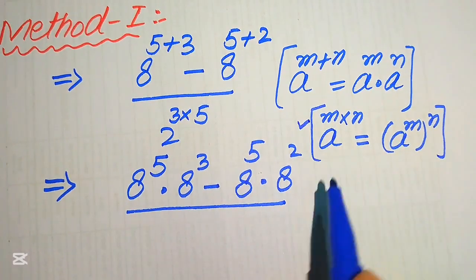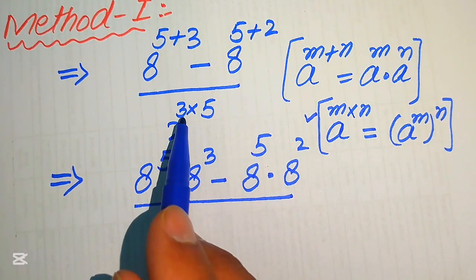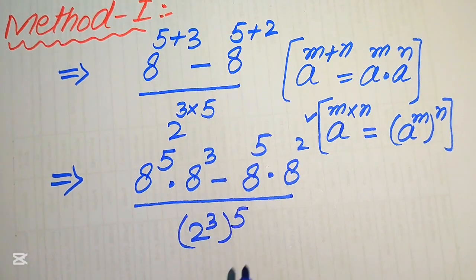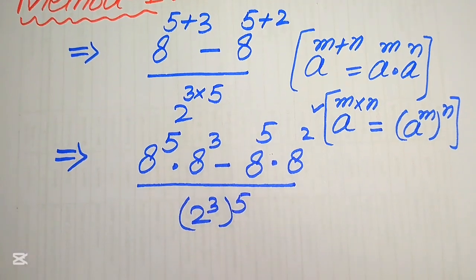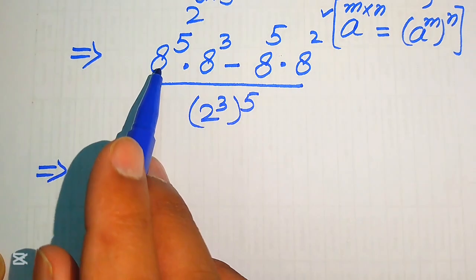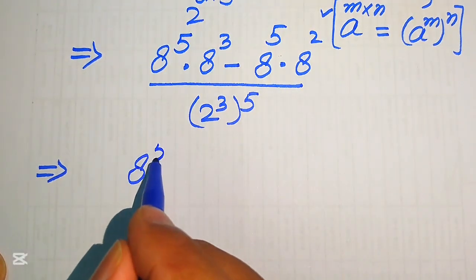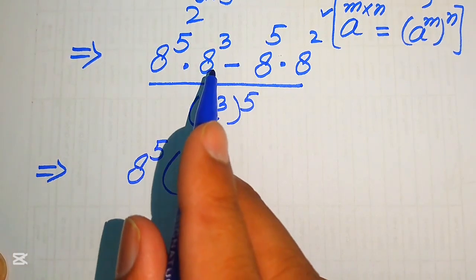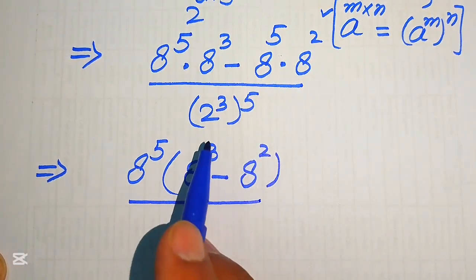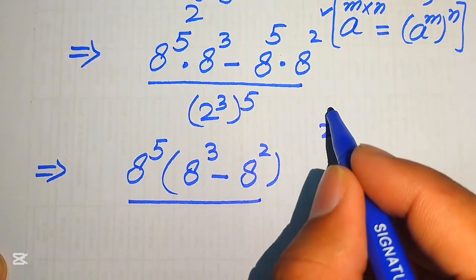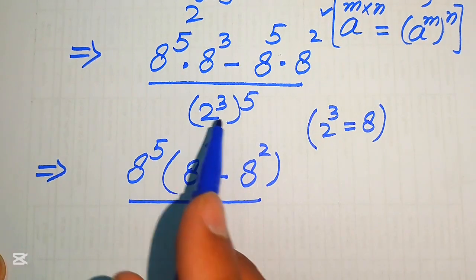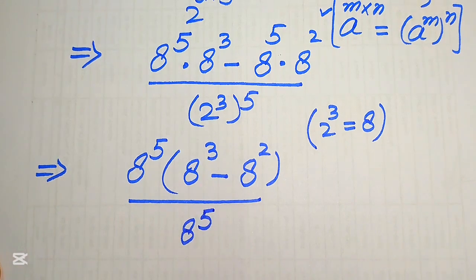In the denominator term we apply this exponent law, so we move the 3 inside the term and it is written as 2 to the power of 3, with its whole exponent equal to 5. For further simplification, we focus on the numerator terms — we have 8 to the power of 5 as a common term, and the remaining values are 8 to the power of 3 minus 8 to the power of 2, divided by 2 cubed to the power of 5. Since 2 cubed equals 8, we replace 2 cubed with 8, giving 8 to the power of 5.